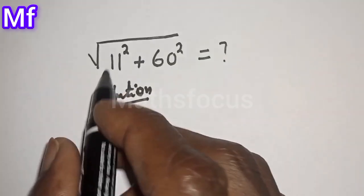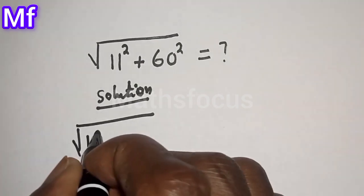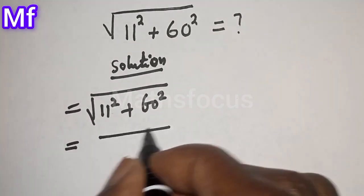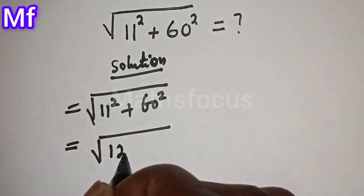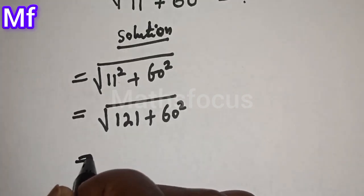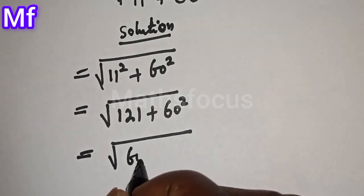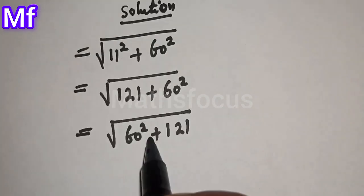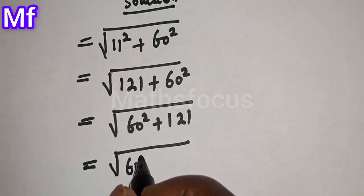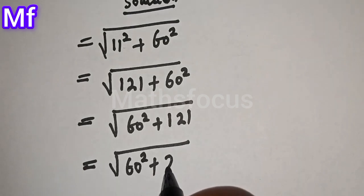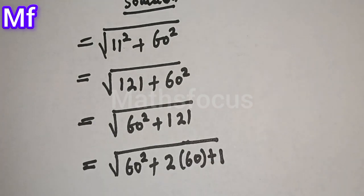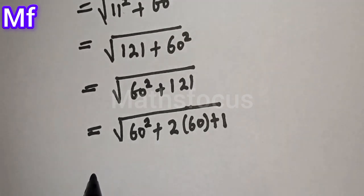Solution: we have square root of 11 squared plus 60 squared. This is equal to square root of 121 plus 60 squared. We can rearrange this to square root of 60 squared plus 121, which does not formally change anything. Then this is equal to square root of 60 squared plus 121, which can be written as 2 multiplied by 60 plus 1, because 2 multiplied by 60 is 120 plus 1 is 121.